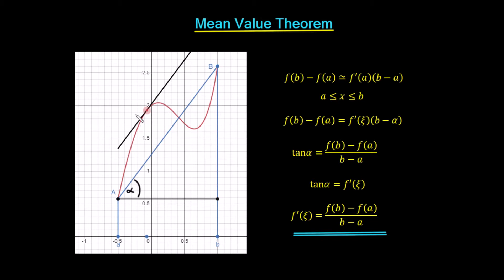Let's start off with this function in red here — this is just some random function. We've picked the leftmost point and called it a, and the rightmost point and called it b. So a is the x-coordinate on the left and b is the x-coordinate on the right. The height to the right point is f of b, and the height to the left point is f of a.